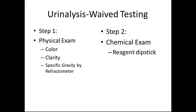The physical exam is the first step in urinalysis, where we evaluate the color, clarity, and specific gravity by a refractometer. Typically today we do not use refractometers; we go by the specific gravity on the reagent dipstick. Step 2 in the urinalysis process is the chemical exam, which is the reagent dipstick, and we can either do this manually or by an analyzer.